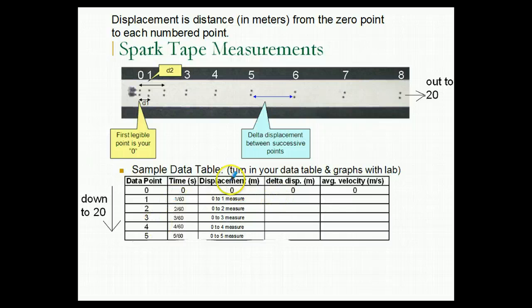Now, this delta displacement column, what that is, is the distance the tape has traveled since the last dot. So the blue line in my drawing here indicates the delta displacement, the change in the displacement since the last displacement measurement.